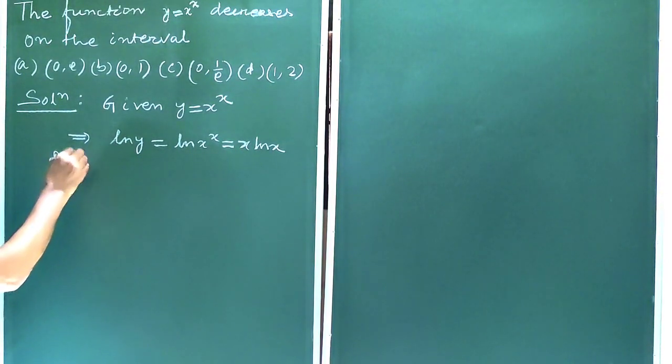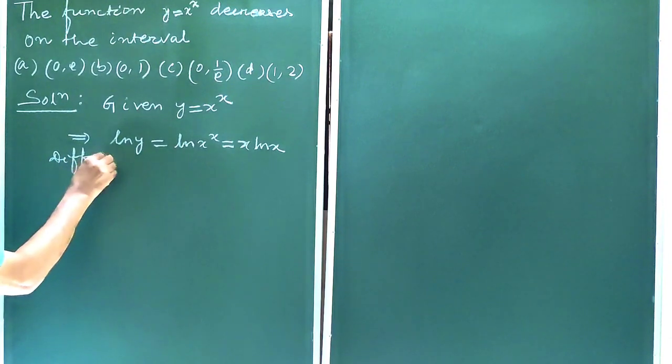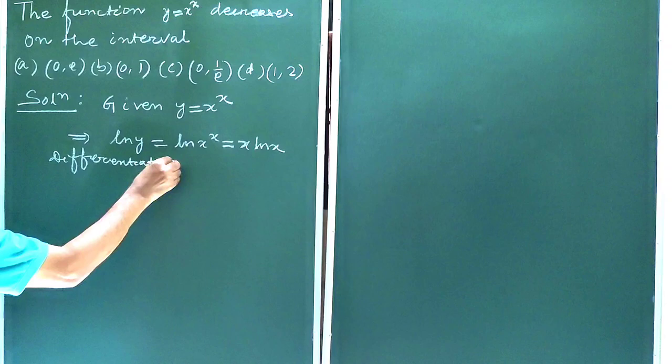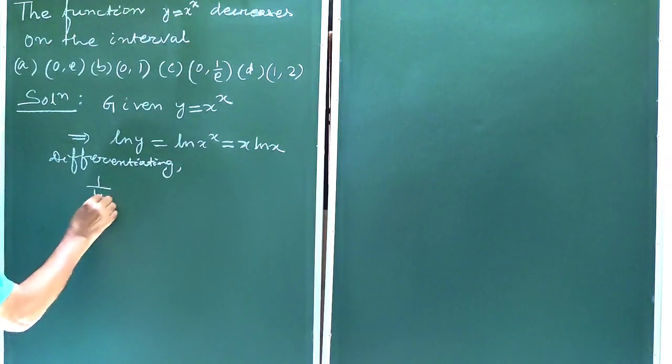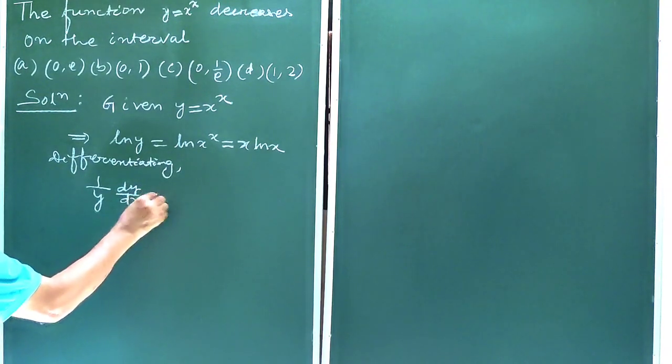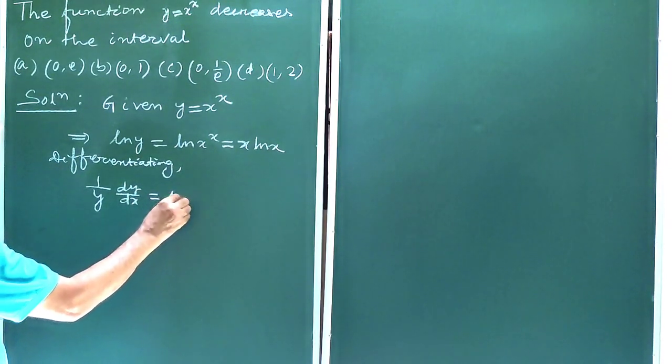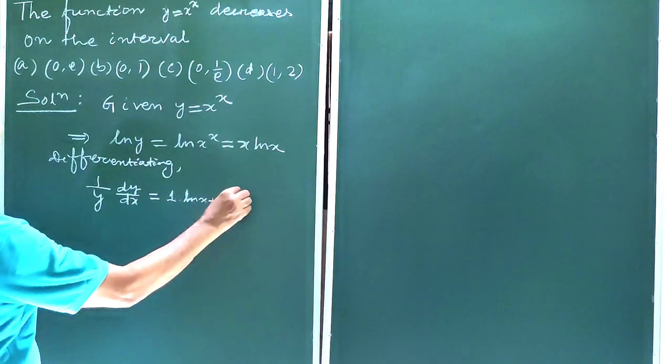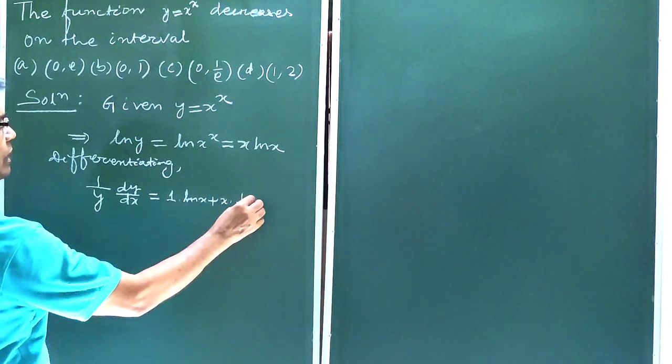Now differentiating. This will be 1 by y dy/dx equals derivative of x is 1 times ln x, plus x times derivative of ln x is 1 by x.